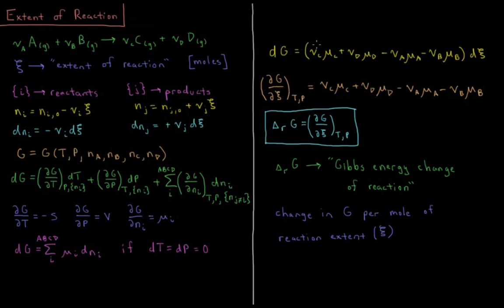This implies that the partial derivative of the Gibbs energy with respect to the extent of reaction at constant temperature and pressure equals the sum of stoichiometric coefficient times chemical potential for each species — positive for products being produced, negative for reactants being consumed. This quantity is defined as the Gibbs energy of reaction: it is ∂G/∂ξ at constant T and P, representing the change in Gibbs energy per mole of extent of reaction ξ.